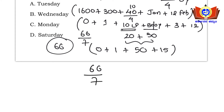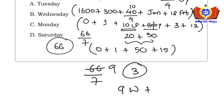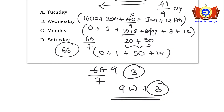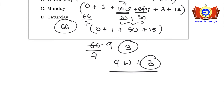66 divided by 7: 9 sevens are 63, remainder 3. So we get 9 weeks plus 3 odd days remaining. 3 corresponds to Wednesday — so Wednesday is the answer.